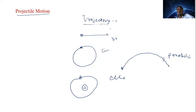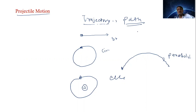So, trajectory means path. The trajectory is a path — it can be a straight line path, a circular path, or a parabolic path. The path followed by the object during its motion is called its trajectory.